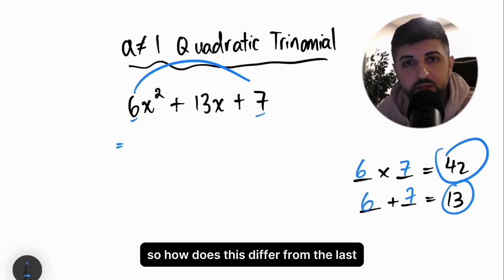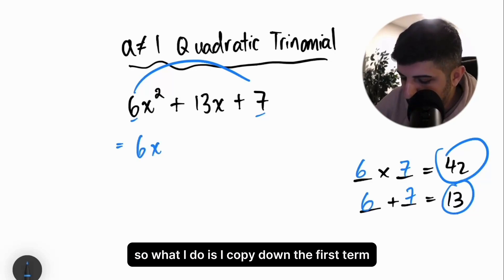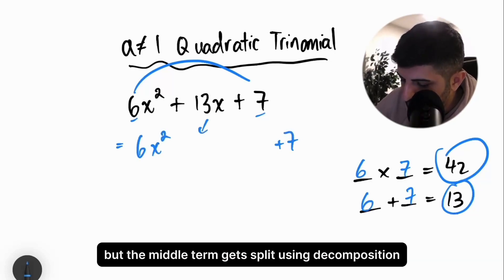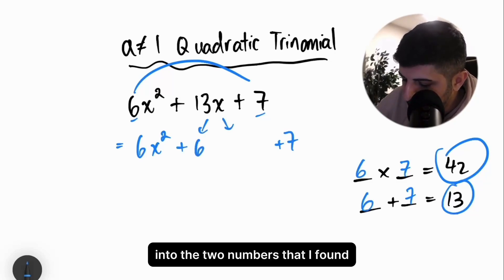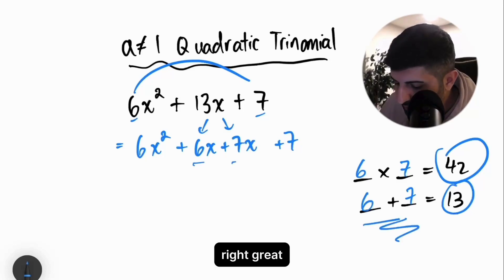How does this differ from the last approach of a equal 1? What I do is I copy down the first term, copy down the last term. Nothing changes there. But the middle term gets split using decomposition into the two numbers that I found. That 6 and 7 is coming from here.